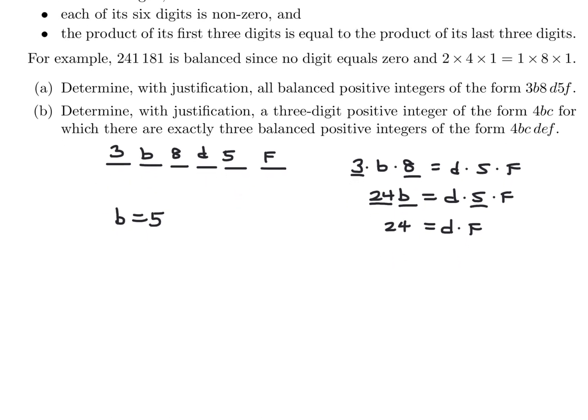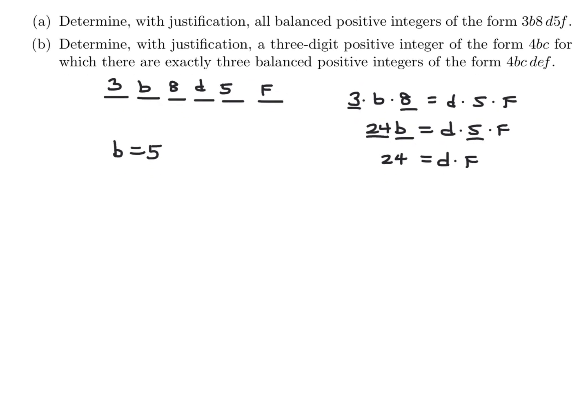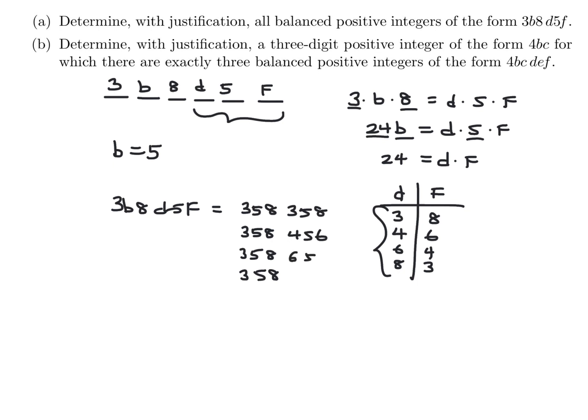Okay, so if that's the case, this just reduces to 24 is equal to D times F. And I think that would give us some limited options, which is a good thing. So let's see. What would be the possibilities for D and F? We can have 3 and 8. We can have 4 and 6, 6 and 4, and 8 and 3. And I think that's it. So therefore, the 3B8D5F, that has only 4 possibilities. It could be 3, 5, 8. Well, they're all 3, 5, 8 since B is 5. But then the D5F part, that is going to be depending on that. So it's going to be either 358, 4, 5, 6, 6, 5, 4, or 8, 5, 3. So these are the ones. That solves that.